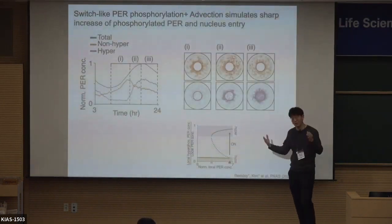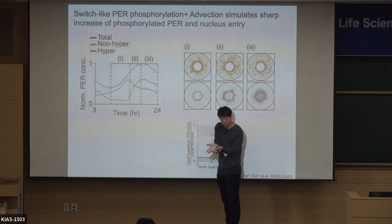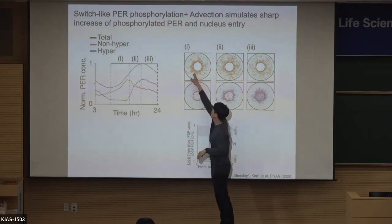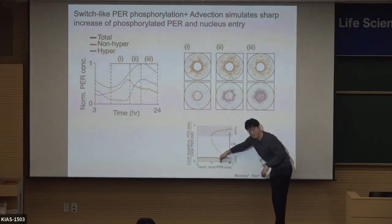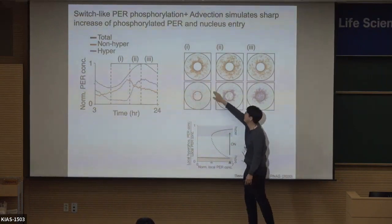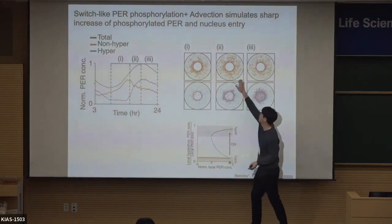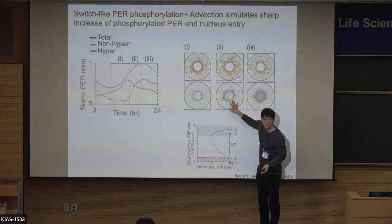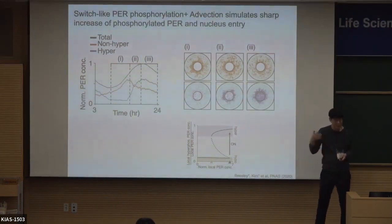When we merged the phospho-switch into the previous agent-based model, we could finally see the collective behavior among molecules. Orange dots represent unphosphorylated protein and purple dots phosphorylated protein that can enter the nucleus. At the beginning, they accumulate at the perinucleus, but the concentration is not high enough, so very few enter. But as more protein accumulates and passes the threshold, they suddenly switch to the phosphorylated state and enter the nucleus altogether. This is the key to collective behavior.